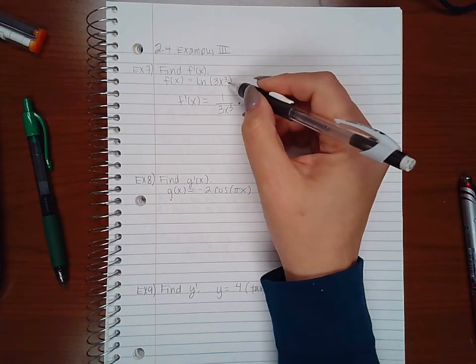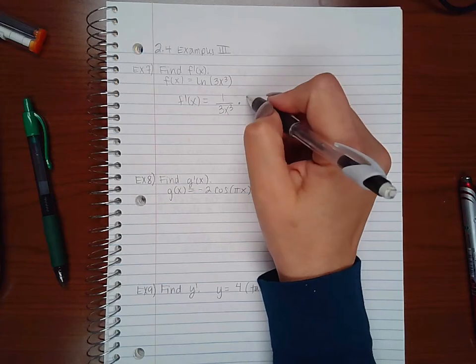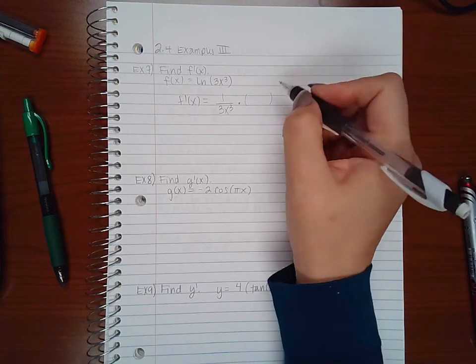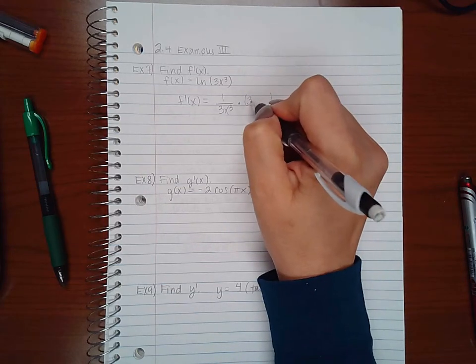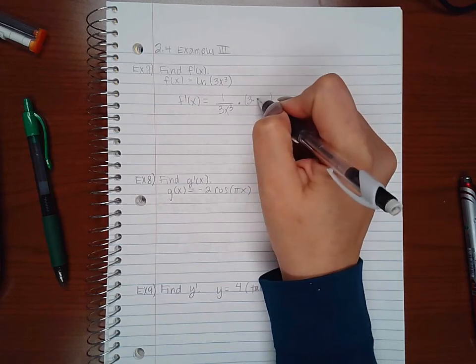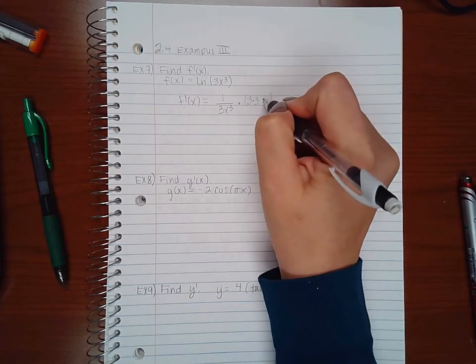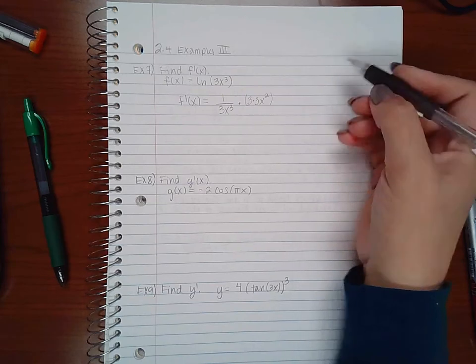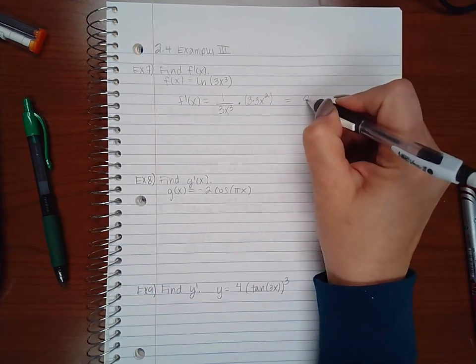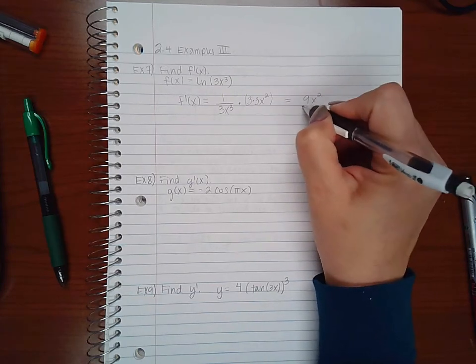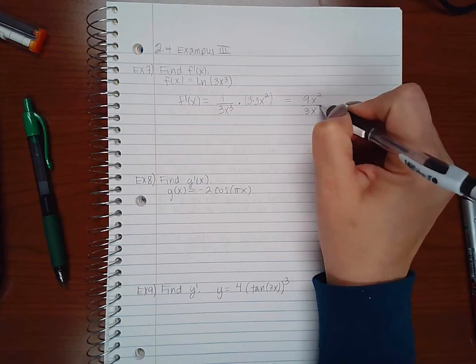However, because the argument is not just x, I do have to multiply by the derivative of that argument. So I get 3 as my constant multiplier, bring down my 3 and decrease the power by 1. So I end up with 9x squared over 3x to the third.